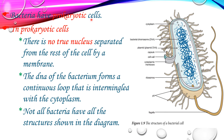Bacteria have prokaryotic cells. In prokaryotic cells, there is no nucleus separated from the rest of the cell by a membrane. Unlike eukaryotic cells where you can see a membrane-bound nucleus, in prokaryotic cells the DNA is diffused throughout the cytoplasm of the bacteria.